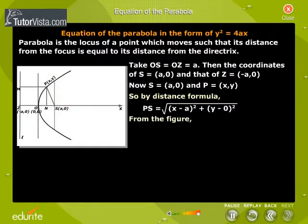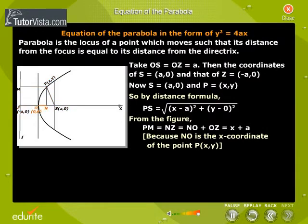From the figure, PM is equal to NZ is equal to NO plus OZ is equal to x plus A, because NO is the x-coordinate of the point P(x, y).